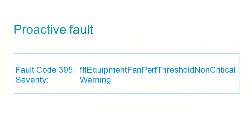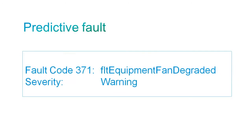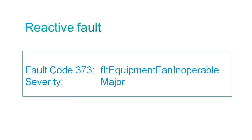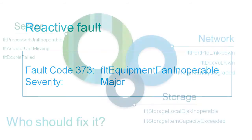Here's an example of a proactive fault: the fan's performance has fallen below a non-critical threshold and the UCSM sends a warning alert. This gives your IT department an opportunity to replace the fan before it becomes inoperable. Here's an example of a predictive fault: the fan's performance is degraded and the UCSM sends a warning alert. And here's a reactive fault: the fan has stopped working and must be replaced.